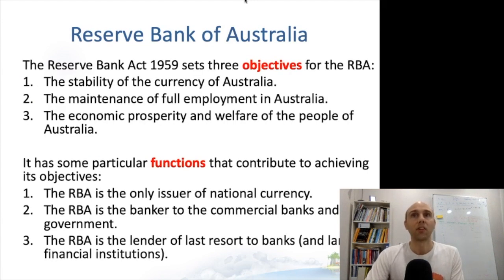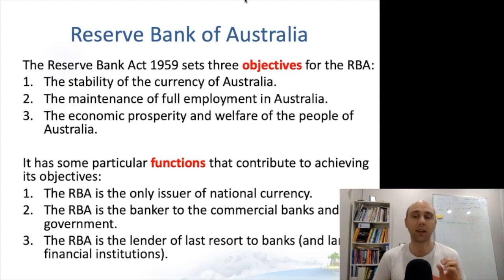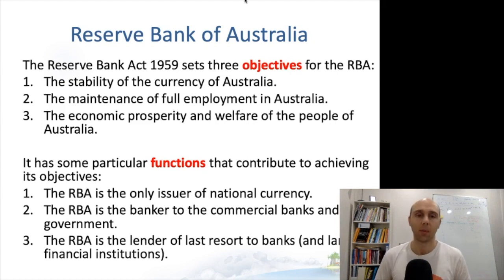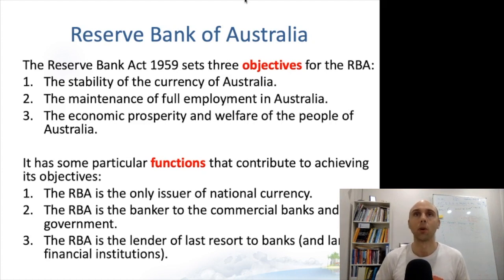The Reserve Bank of Australia has three key objectives. The first is the stability of the Australian currency. The second is to try to maintain full employment in Australia — full employment has a very specific economic definition; it does not mean that everyone is employed, but for the purposes of this lecture you can think of it as keeping unemployment very low. The third is a general objective: to promote the economic prosperity and welfare of the Australian people.